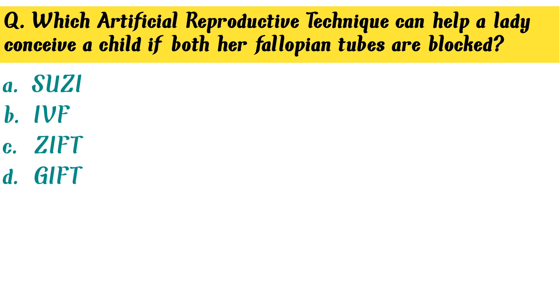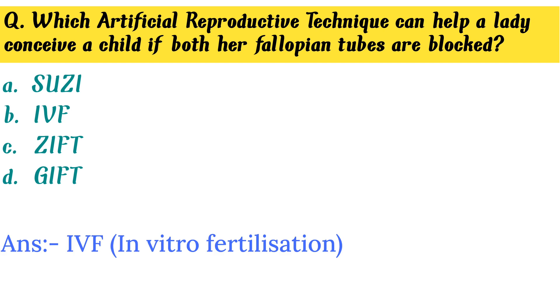Which artificial reproductive technique can help a lady conceive a child if both her fallopian tubes are blocked? Option D. All of the above is the correct answer.